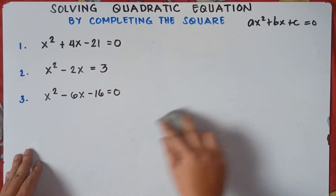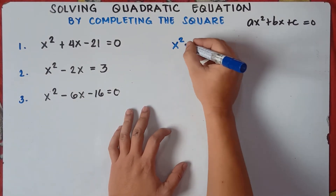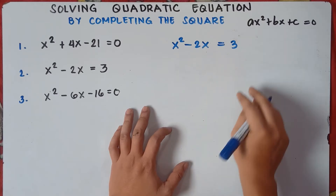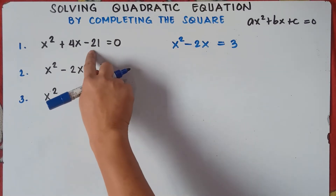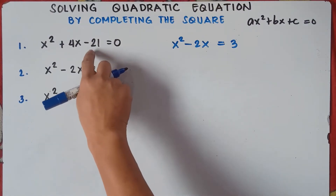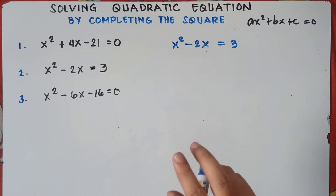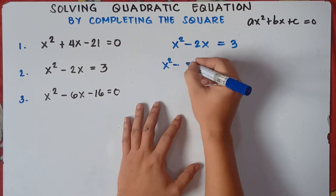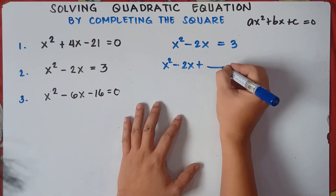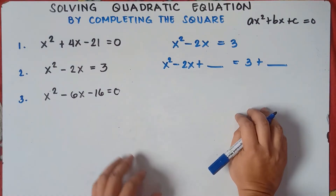Let's try number 2: x squared minus 2x equals 3. Check — the constant 3 is already on the right side of the equal sign. For number 1, we had to transpose 21 from the left to the right. Since 3 is already on the right side, we just need to add a new constant. So this will be: x squared minus 2x plus a new constant equals 3 plus that same new constant.